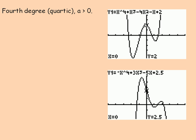This one in the top graph has a leading coefficient that's positive — you can see in the example it's x to the fourth plus x cubed, etc. If the leading coefficient is positive for a quartic, it goes from quadrant two to quadrant one. It actually looks like the shape of a W. A quartic function can cross the x-axis in at most four places — one, two, three, four.